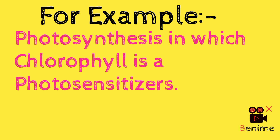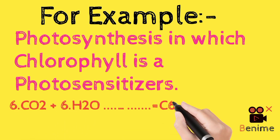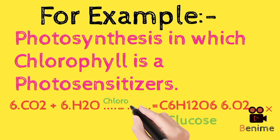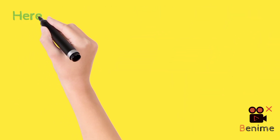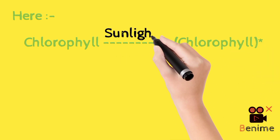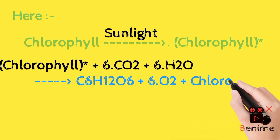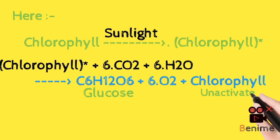An example of photosensitization is photosynthesis. The reaction is: 6CO₂ + 6H₂O in the presence of chlorophyll forms glucose and oxygen. Here, chlorophyll is activated by sunlight. Chlorophyll activated by sunlight reacts with carbon dioxide and water to produce glucose, and the chlorophyll becomes unactivated again.